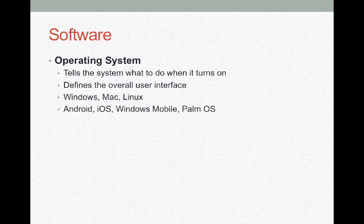Software with respect to a computer comes in several types. First is the operating system, which tells the computer what to do when it turns on and defines how the computer interfaces with the user — whether there will be a monitor, mouse, touch screen, or keyboard. Examples of operating systems include Windows, Mac OS, Linux, and Unix. On mobile devices such as phones, there's Android, iOS, Windows Mobile, or Palm operating systems.